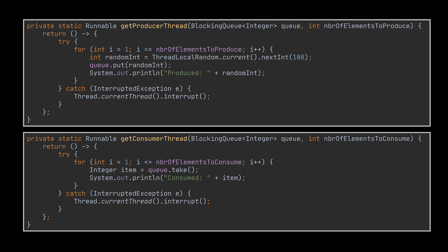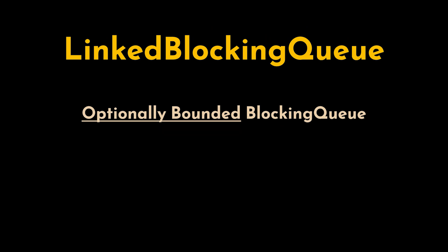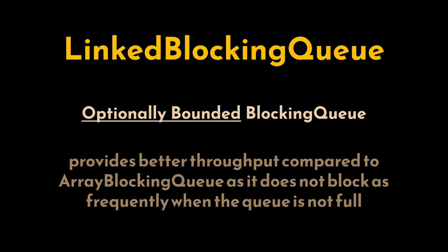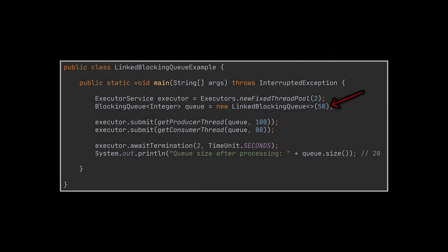Feel free to pause the video and take a look at the producer and consumer threads, as we will be using them in all our examples. Next, we have the LinkedBlockingQueue, which is an optionally bounded blocking queue backed by linked nodes. If no capacity is specified, it will act as an unbounded queue. It provides better throughput compared to the ArrayBlockingQueue because it does not block as frequently when the queue is not full.